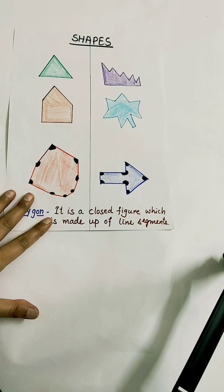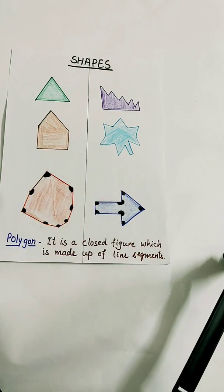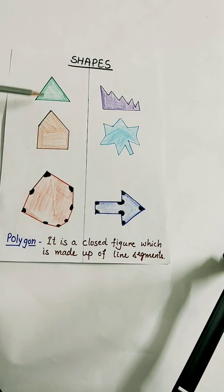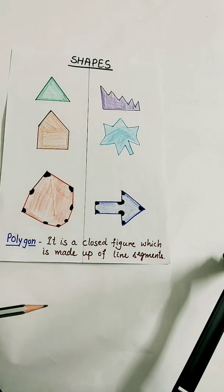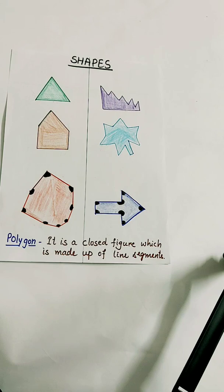Now can you see — is there any difference between these two types of polygons? According to this difference, the name given to the first type is convex polygons and the name given to the second type is concave polygons. In today's video we are going to learn about these polygons and use different properties to understand them. At the end I am going to tell you a trick to remember which one is convex and which one is concave.